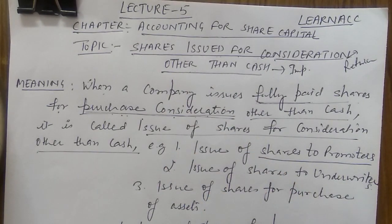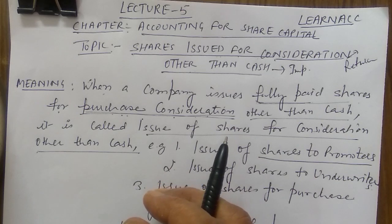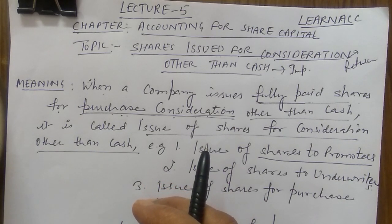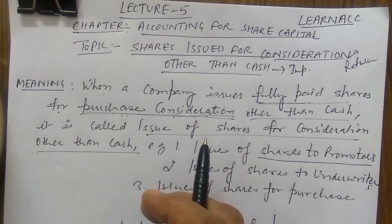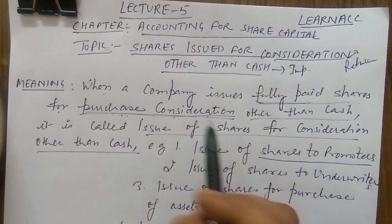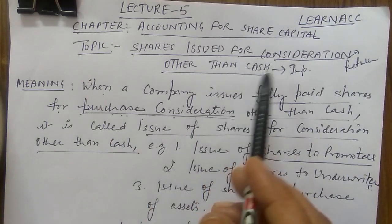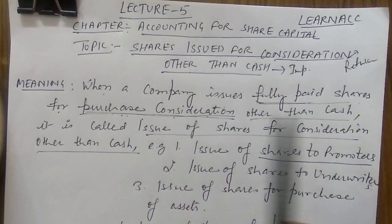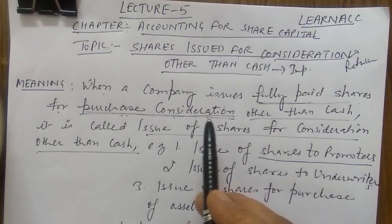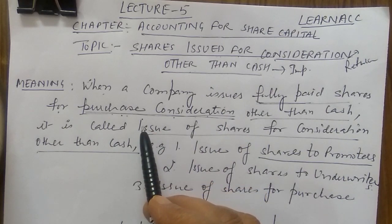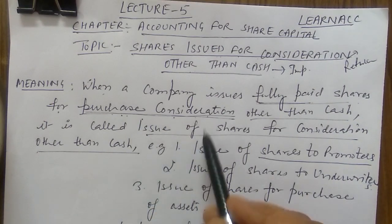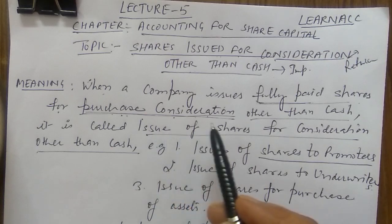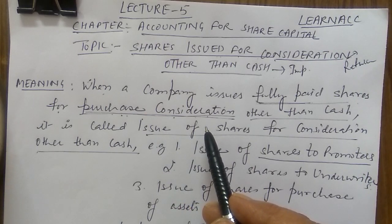For example, suppose I purchased a machine worth ₹2 lakh from ABC Company. Instead of paying ₹2 lakh in cash, I said: take 2,000 shares of my company at ₹100 each. So I issued 2,000 shares at ₹100. The company is giving shares and receiving an asset. That is shares issued for consideration other than cash.